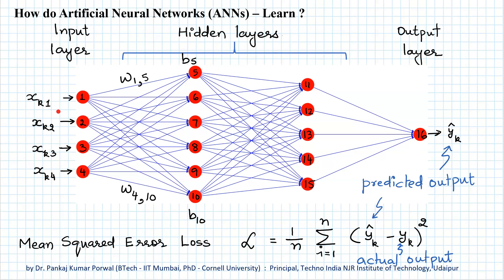These networks are called feed-forward and back propagation networks: input flows in the forward direction, and the error or weight update flows in the backward direction. A detailed example of how this feed-forward and back propagation works will be shown in the next video — the link is given in the pop-up card above.